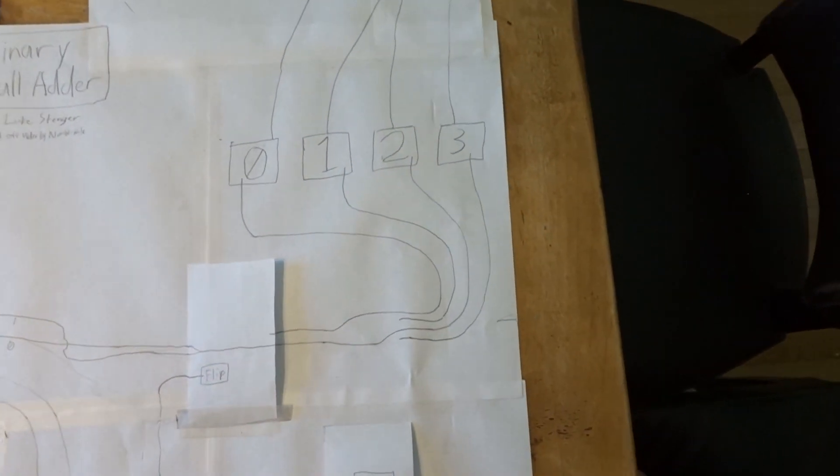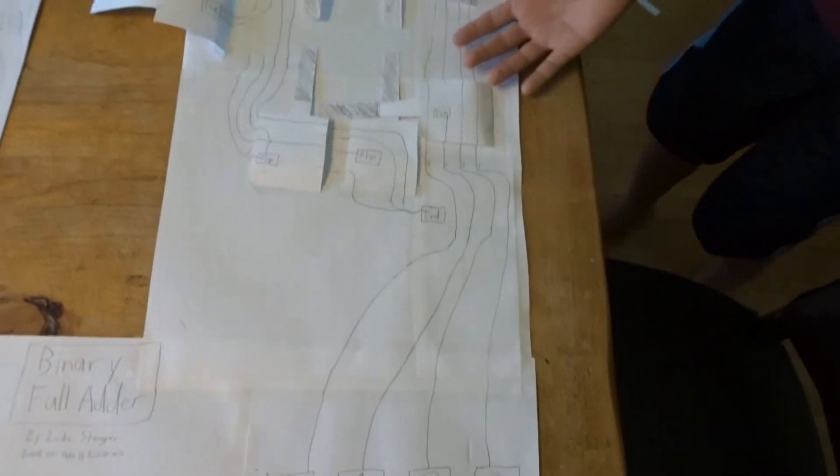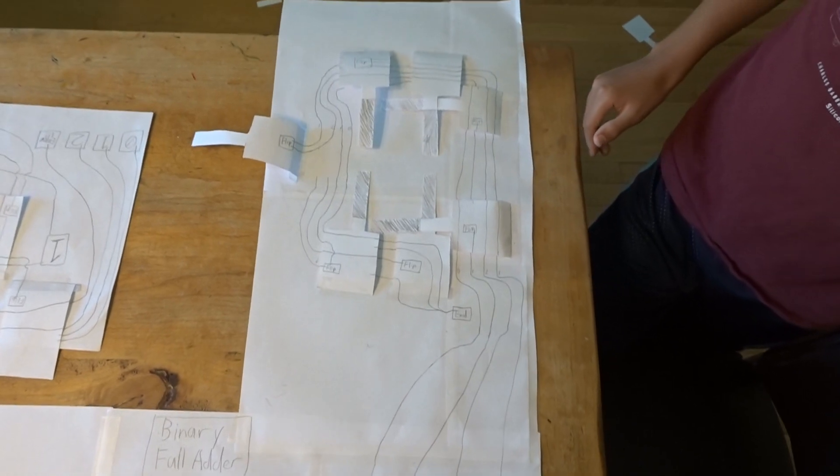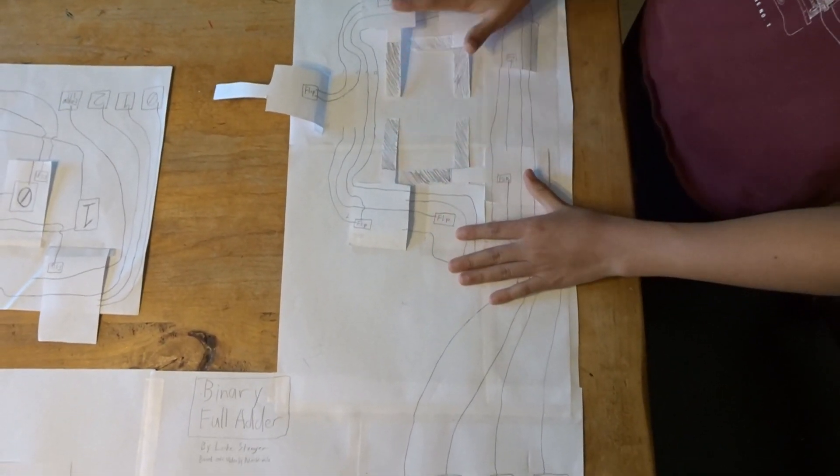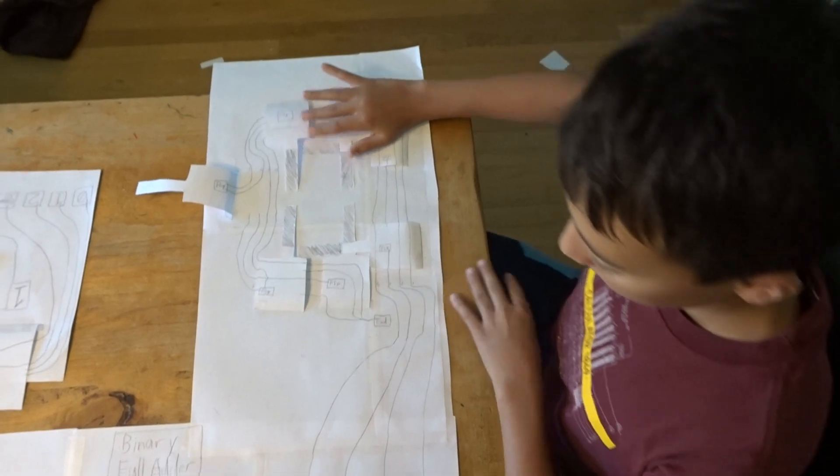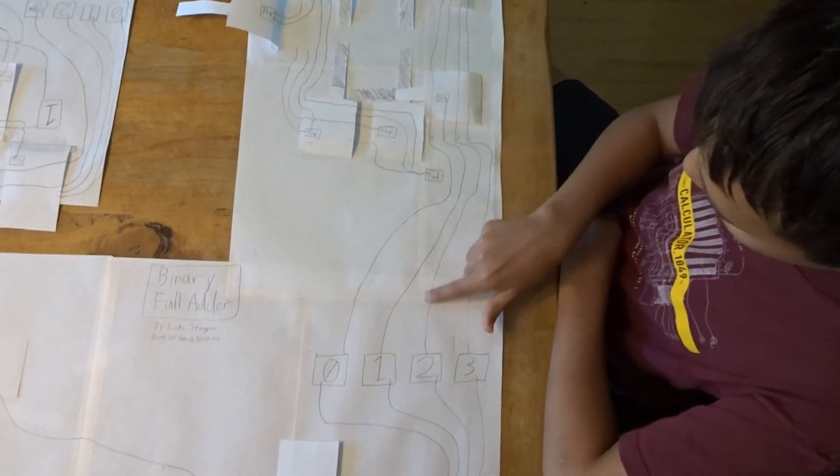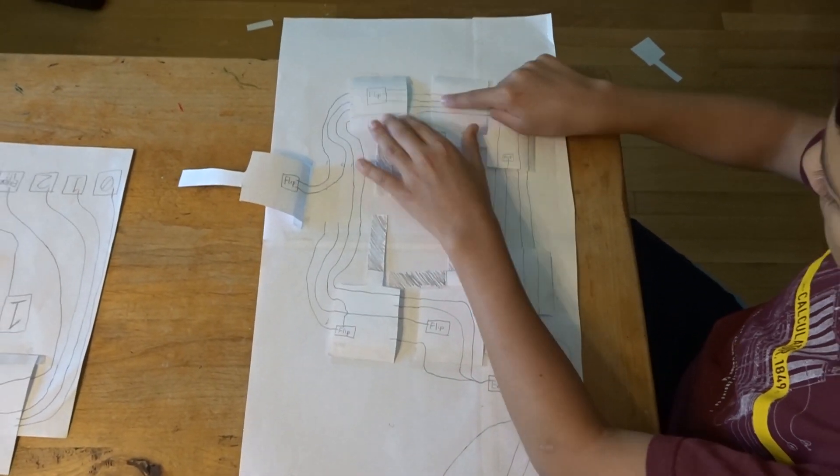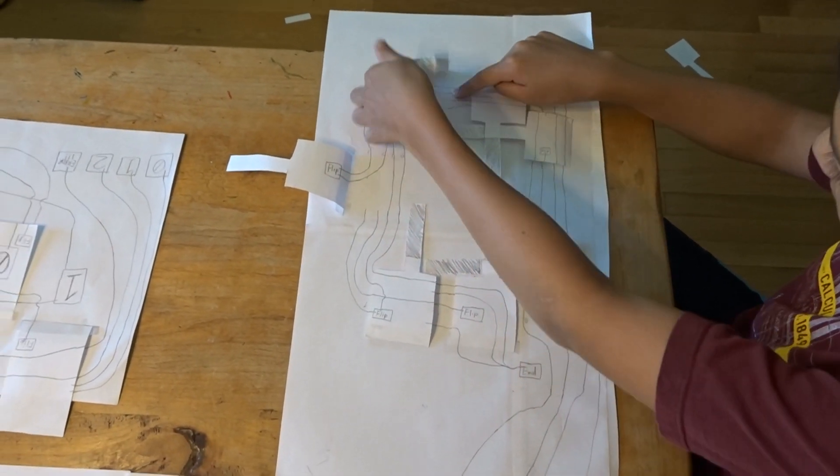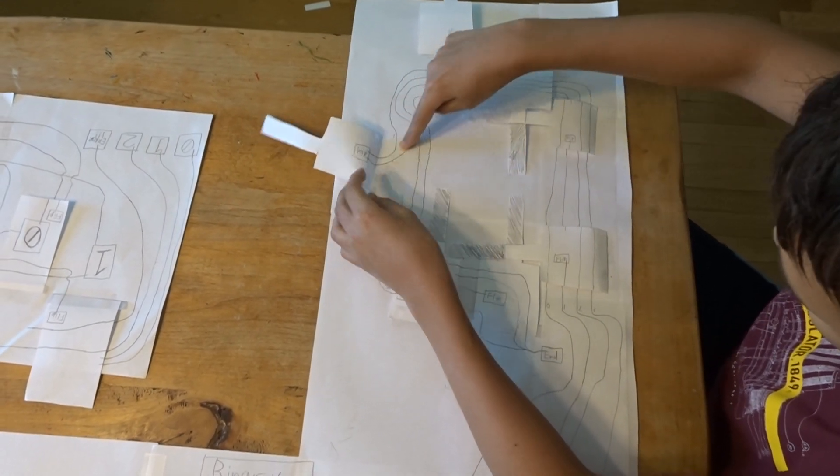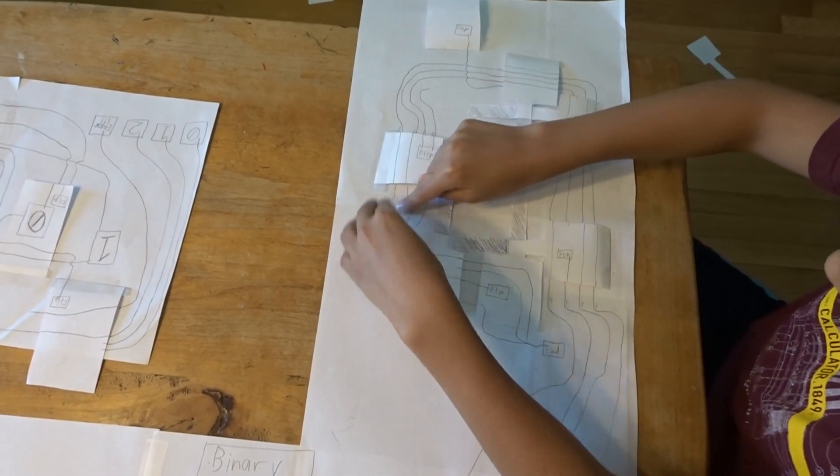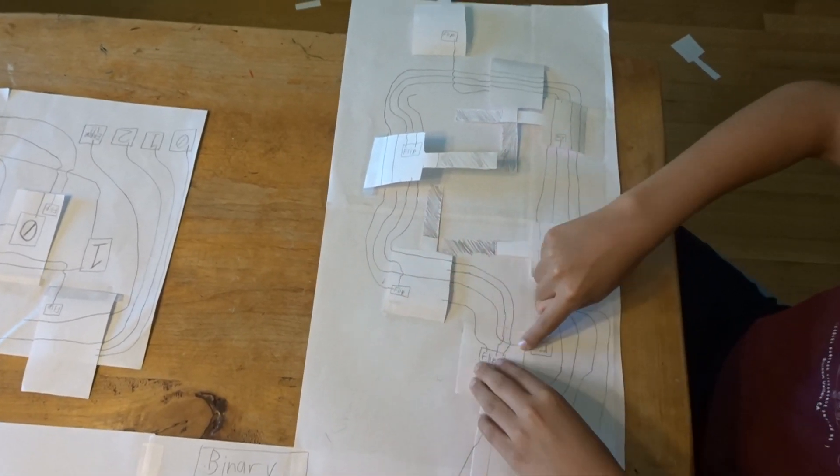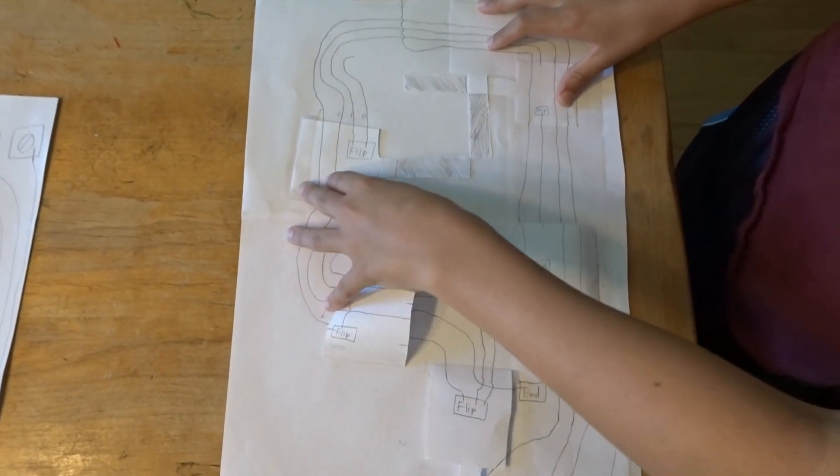And I also added a seven segment display up here, which is like what you could have on an oven or a microwave or something, where it has seven segments that are either on or off, and you can use them to do each number. So if I have two here, you get to the end, and now the seven segment display says two.